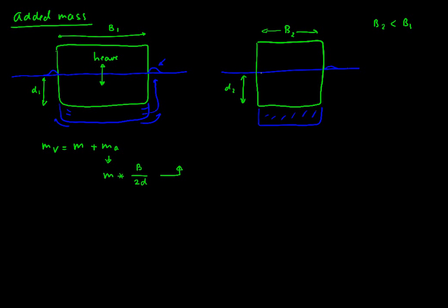So we get a smaller wave up there and a smaller wave up there. So the added mass is actually a function of the beam to draught ratio.